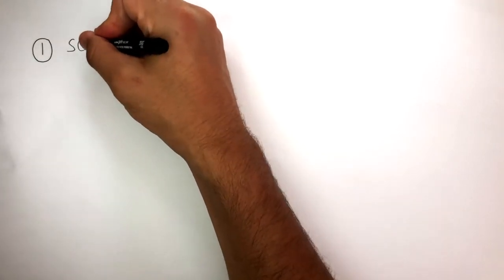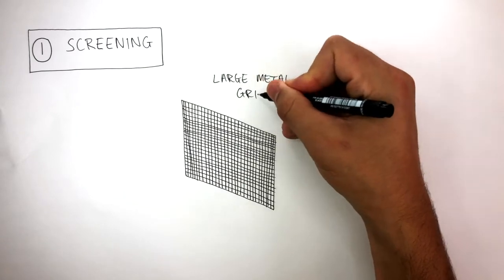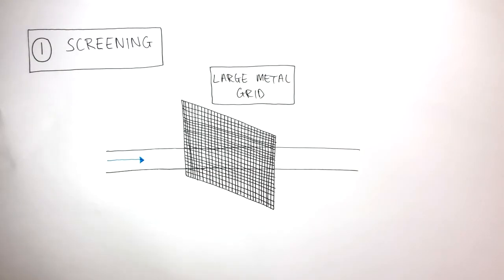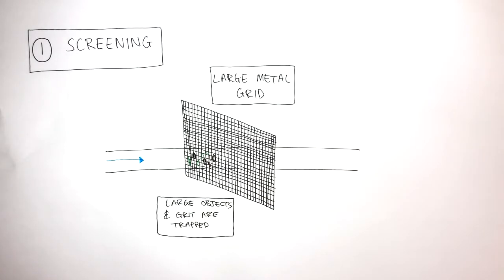Step one is screening. This diagram represents a large metal grid which the sewage flows through. Large objects and grit are trapped and the sewage then continues flowing along onto the next stage.